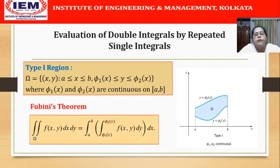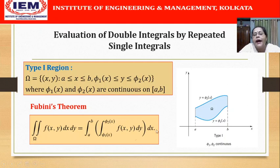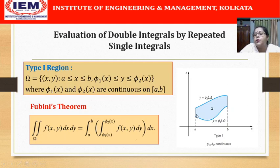When we evaluate double integrals, the main task is to find the limits of x and y such that the entire region omega is covered. In a Type 1 region, we first integrate with respect to y, where y is changing from phi_1(x) to phi_2(x), and then integrate with respect to x from a to b. Essentially, we take a vertical strip varying y from the lower curve to the upper curve, then vary this vertical strip from x equal to a to x equal to b, covering the whole region.